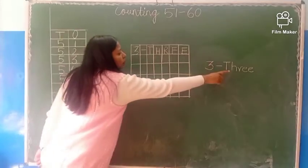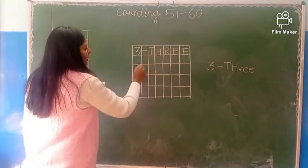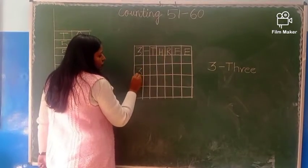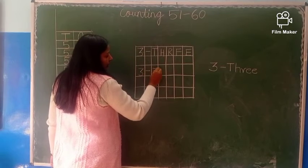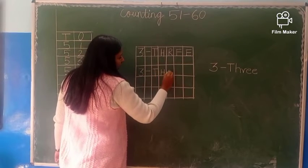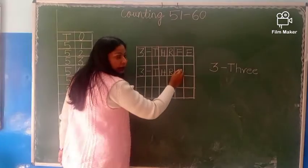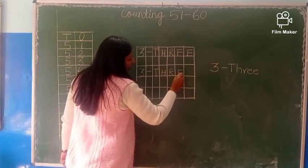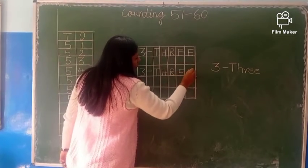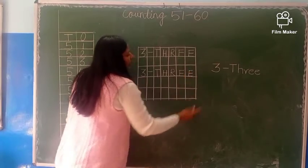So you have to write in small then in capital. Again we write in box then in line and again T-H-R-E-E, jisko kahte hai double E. Two times ho raha hai na, so we call it double E.